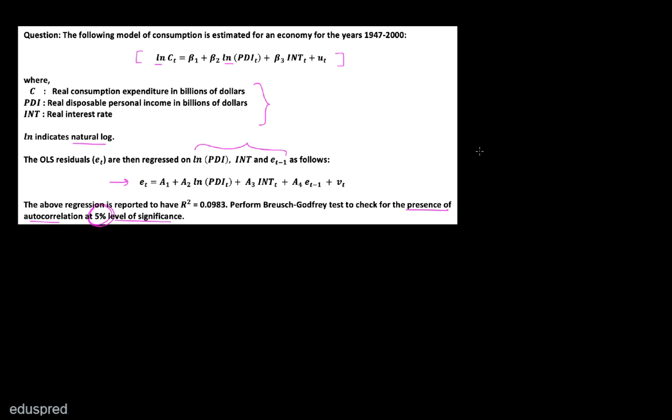This is a straightforward question. Let's take a look at the information given to us. First of all, note that this is time series data — we have data for the years 1947 to 2000. Because this is time series data, we use T as the subscript. Generally speaking, when we work with cross-sectional data, we put i in the subscript, whereas with time series data, we put T as the subscript.